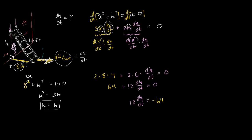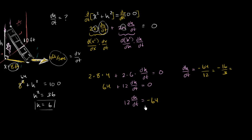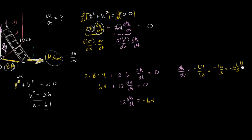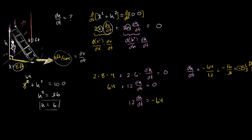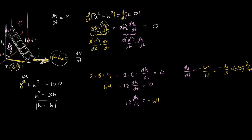Then we just divide both sides by 12. The rate of change of h with respect to time is equal to −64/12, which simplifies to −16/3, which is equal to −5⅓ feet per second. And we're done. Let's do a reality check: does it make sense that we got a negative value? Yes — our height is decreasing, so it completely makes sense that its rate of change is negative.